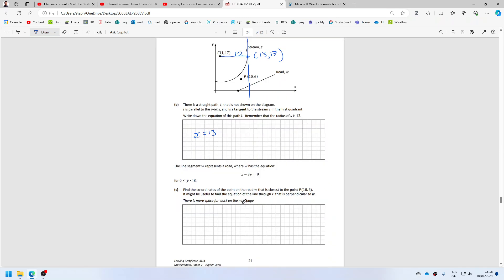All right, what's next? This line segment W represents a road which has that equation. Y must be between 0 and 8. Find the coordinates of the point on the road W that is closest to the point 10, 6.